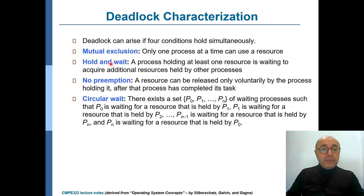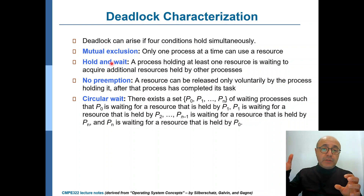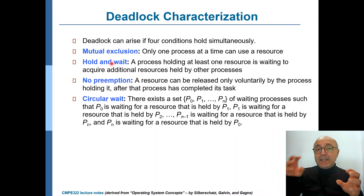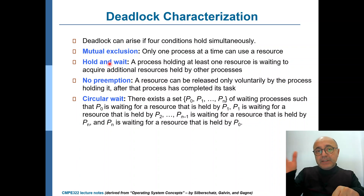The second condition is hold and wait. That means process P1 holds resource R1 and is waiting for another resource R2 held by some other process P2. P1 is not able to proceed because R2 is not available — it's held by another process. So P1 is holding R1 and waiting for R2 which is held by P2.